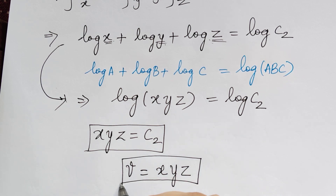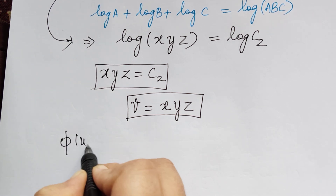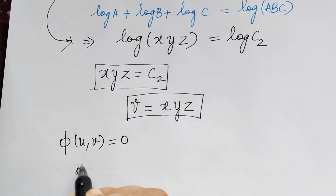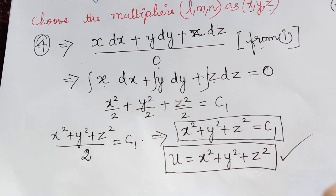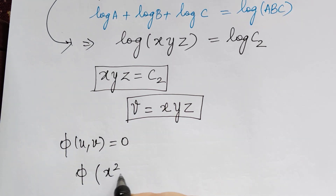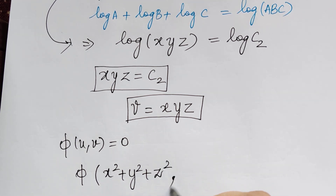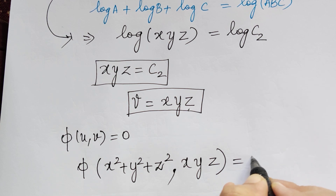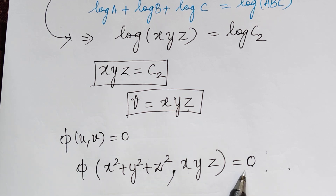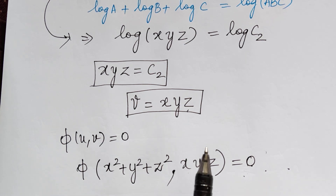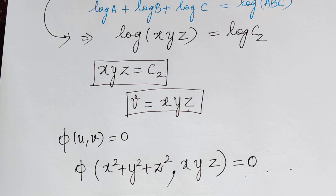We have found u = x² + y² + z² and v = xyz. Therefore, the general solution φ(u, v) = 0 is given by φ(x² + y² + z², xyz) = 0. This can also be written with a general constant depending on the textbook. Hope you have understood this problem. The next problem, problem 14, is a very important question from an examination point of view and has appeared in various question papers, so kindly follow the next lecture. Thank you.